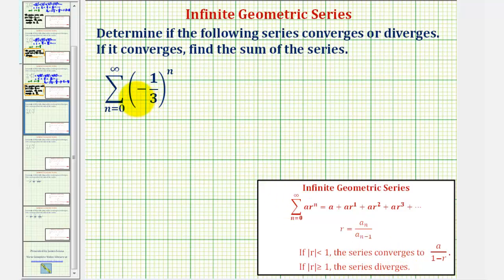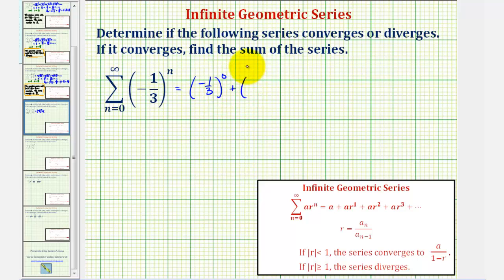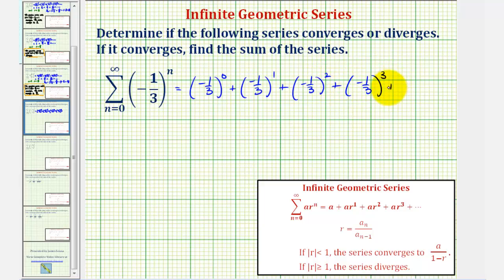Looking at our formula here, we recognize that r is equal to negative one-third. Let's also take the time to generate the first few terms of our series. Notice the index starts at zero, so the first term would be negative one-third raised to the zero, plus negative one-third to the first, plus negative one-third to the second, plus negative one-third to the third, and so on.